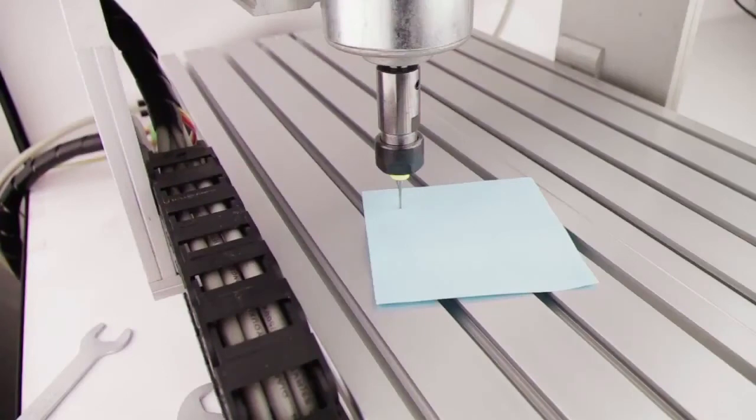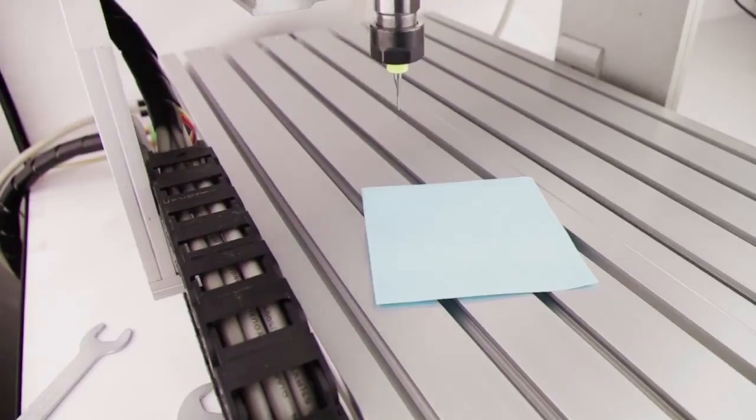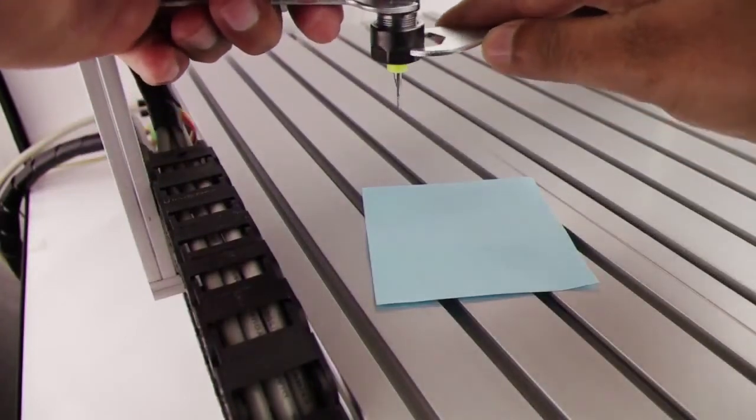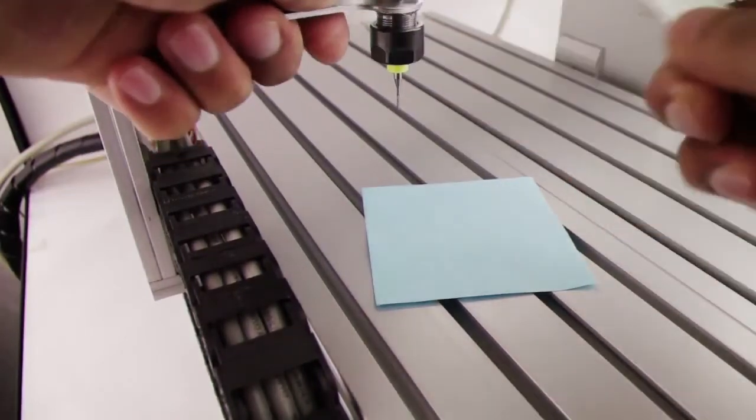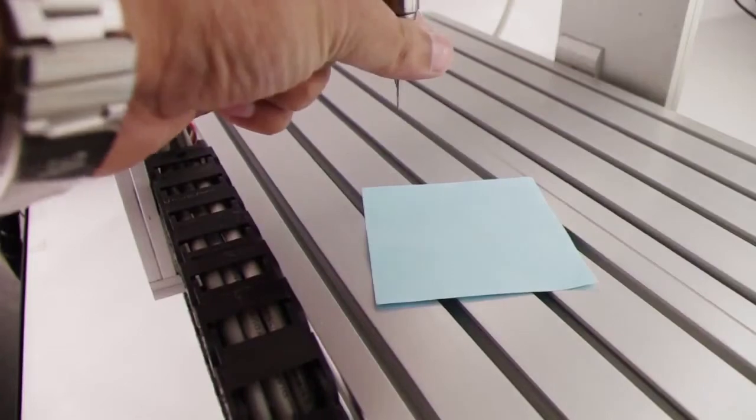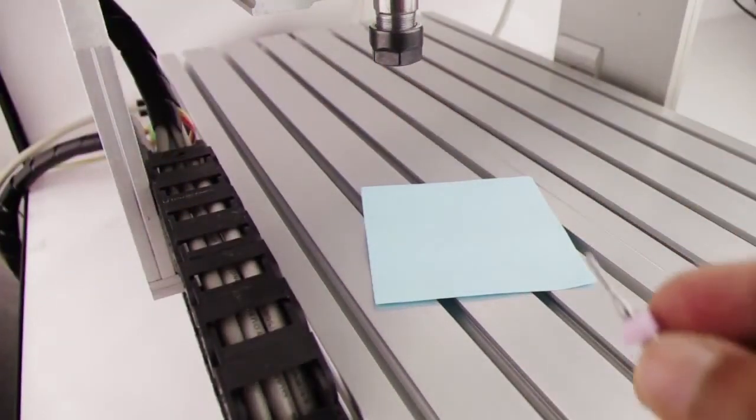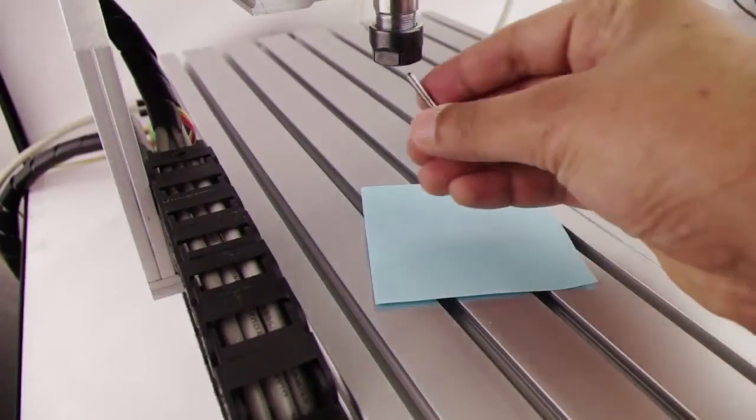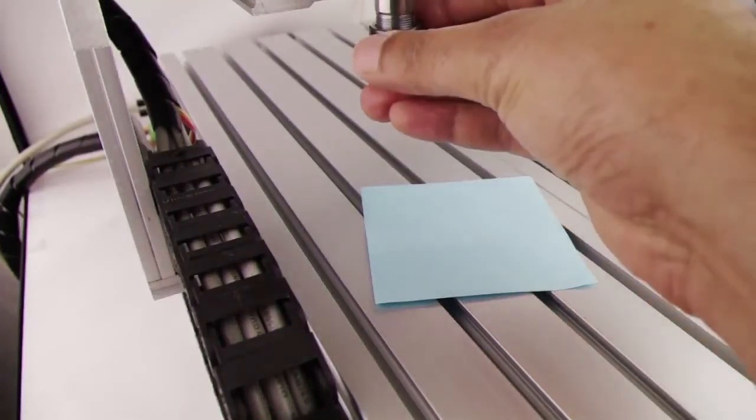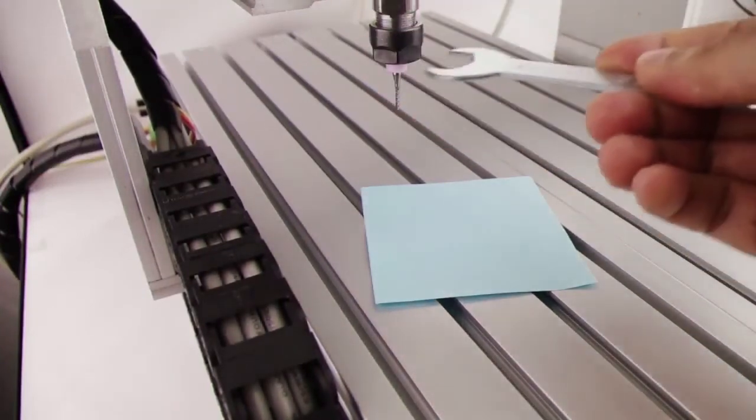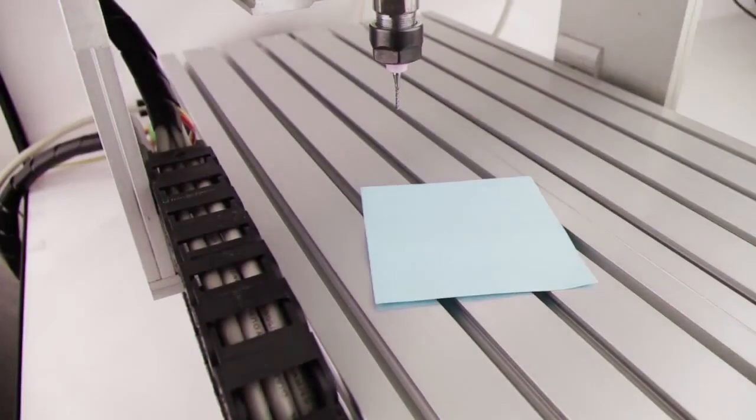We will go to the F3 screen, move the Z axis up, change the tool. So we are going to put the next tool in, push it all the way in. And now we are going to do the same touch off again with this tool.